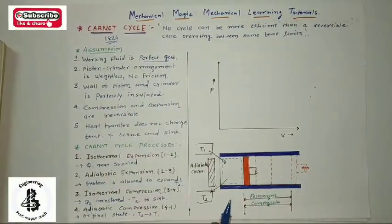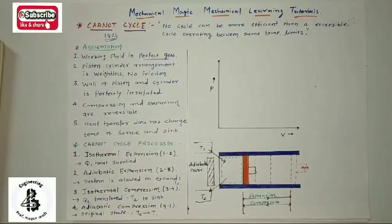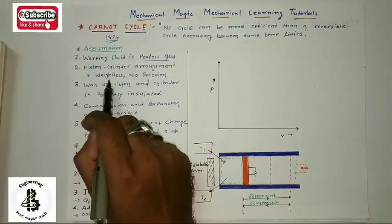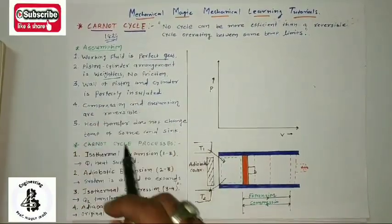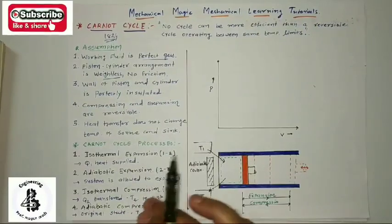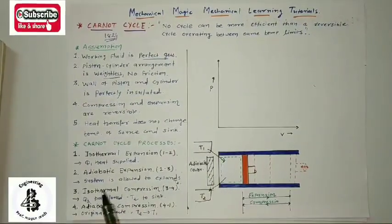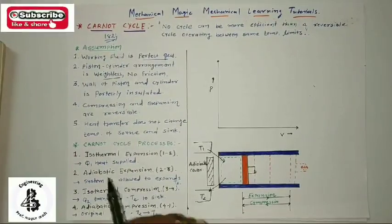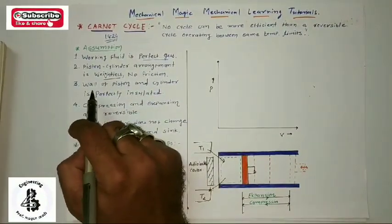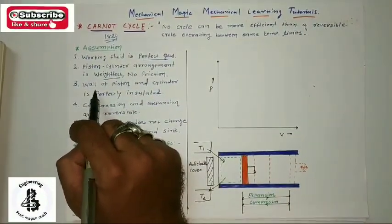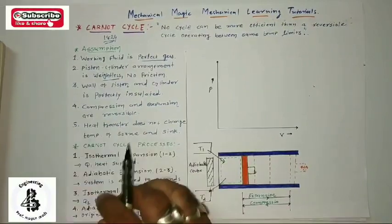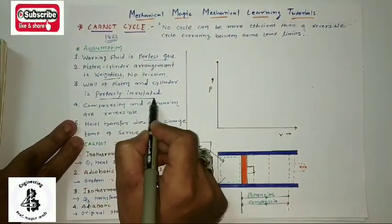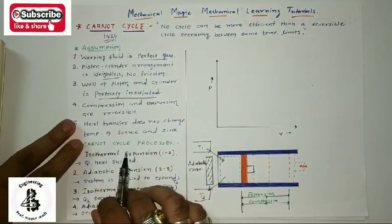Second, the piston-cylinder arrangement is considered weightless and there is no friction between the movement of the piston in the cylinder — though practically that is not possible. Third, the walls of the piston and cylinder are perfectly insulated, which is also a theoretical assumption and practically next to impossible.